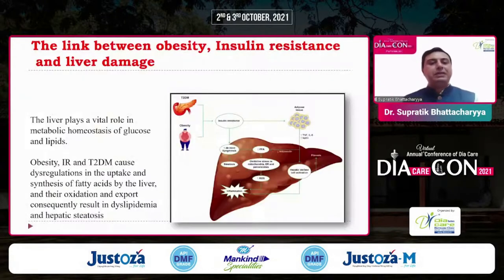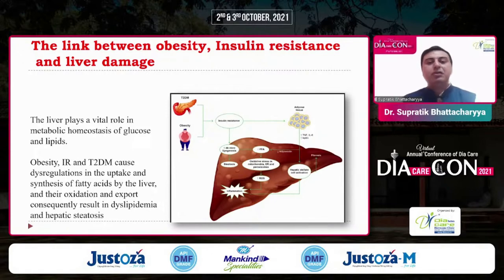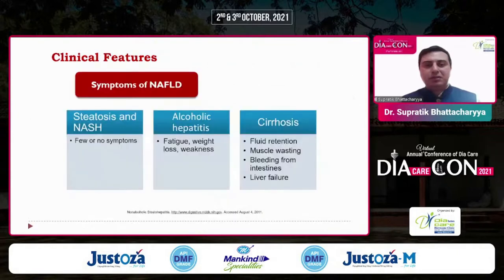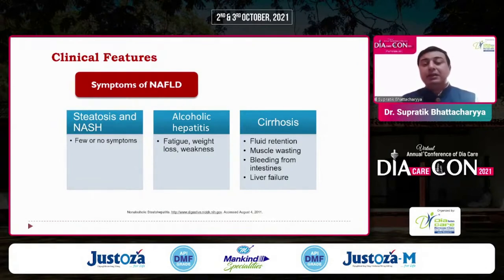The liver has a pivotal role in metabolic homeostasis of glucose and lipids. Obesity, insulin resistance, and type 2 diabetes cause dysregulation in the uptake and synthesis of fatty acids by the liver and their oxidation, resulting in dyslipidemia and hepatic steatosis. Symptoms can be completely asymptomatic — steatosis and NASH present with few or no symptoms. Sometimes alcoholic hepatitis develops with fatigue, weight loss, and weakness.